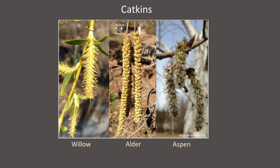Catkins are structures that contain hundreds of tiny flowers that are pollinated by wind, and depending on the plant species, they can be male or female flowers. Catkins are a high-protein food eaten by wildlife, including ruffed grouse, wild turkeys, northern cardinals, cedar waxwings, and squirrels.